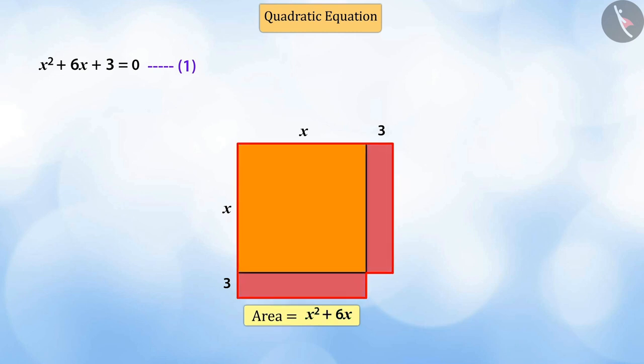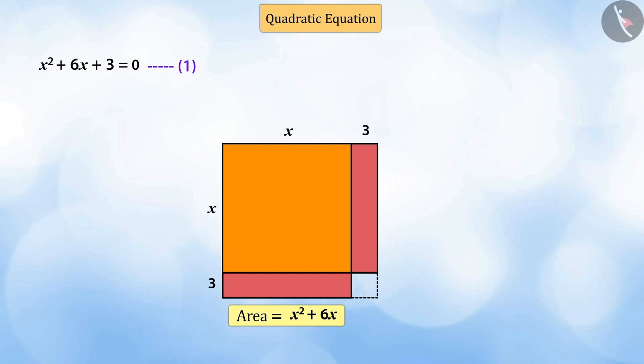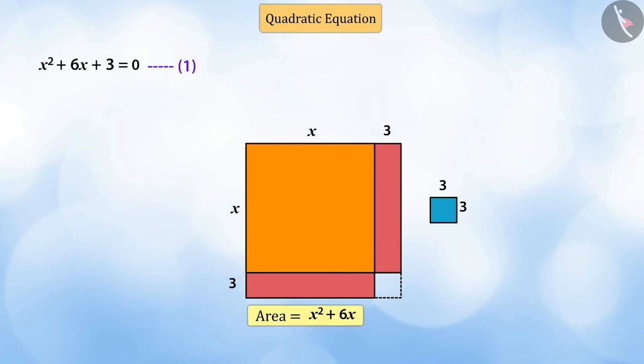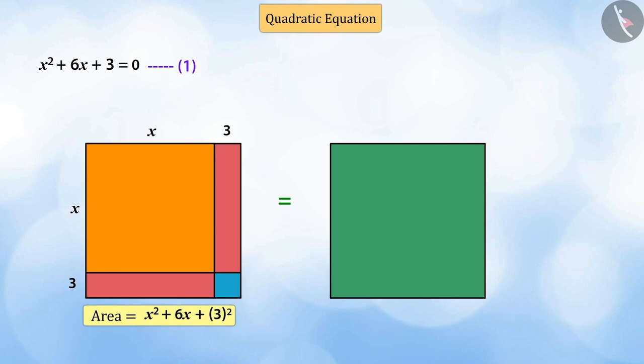We can say that this shape is neither a square nor a rectangle. Can you guess what should be done to complete the shape as a square? In order to complete this shape, we need a square piece of side 3 units. Let's add a square piece of side 3 units to the figure. On doing so, we get a square, whose each side will be x plus 3 and its total area will be x plus 3 the whole square.